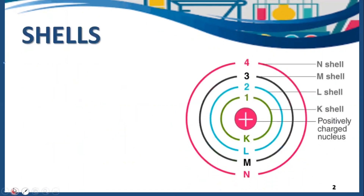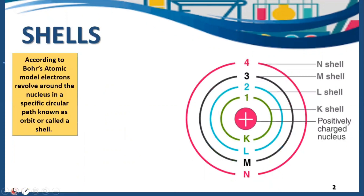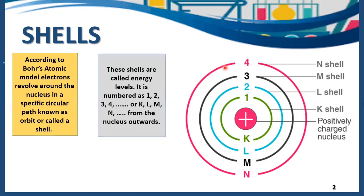What are the shells? According to Bohr's atomic model, electrons revolve around the nucleus in specific circular paths. These circular paths are named as orbits or shells. These shells are also called energy levels and they are numbered as 1, 2, 3 and 4. Shell 1 is named K shell, shell 2 is L shell, shell 3 is M shell, and shell 4 is N shell. They are represented by n.